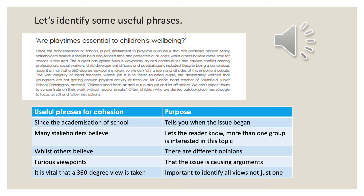Now that we've found and understood the shape, we need to understand the mechanics of how that shape is created. We're going to look at useful phrases and their purpose — these are used for the flow and cohesion of the piece of writing. Let's look at the first paragraph together. 'Are playtimes essential to children's well-being?' — that's our key question. Then: 'Since the academisation of schools, pupils' entitlement to playtime is an issue that has polarised opinion.' I've highlighted 'since the academisation of schools' as a useful phrase for cohesion because it tells you when this issue began. The word 'since' tells you when it started. And 'polarised opinion' is a really nice phrase showing two opinions on opposite sides — polar opposites, like a magnet, two completely different sides.